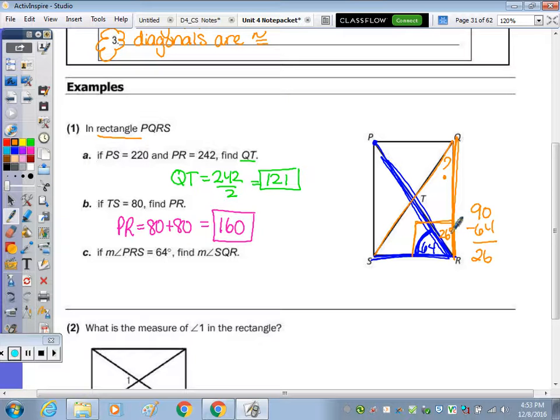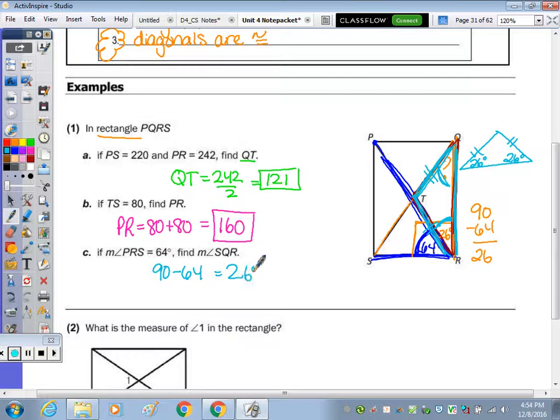In this triangle, each piece of the diagonal is congruent, which creates an isosceles triangle. In an isosceles triangle, if one of the base angles is 26 degrees, then the other base angle is also 26 degrees. So this angle right here is the same as that one, also 26 degrees. We found this by doing 90 minus 64 to get 26 degrees.